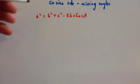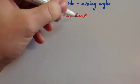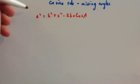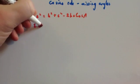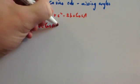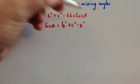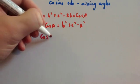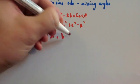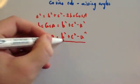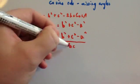You just rearrange it. Bring the -2bc cos A to the other side and bring the a² over to that side. You're going to get 2bc cos A = b² + c² - a². Then divide by the 2bc, so cos A = (b² + c² - a²) / 2bc.